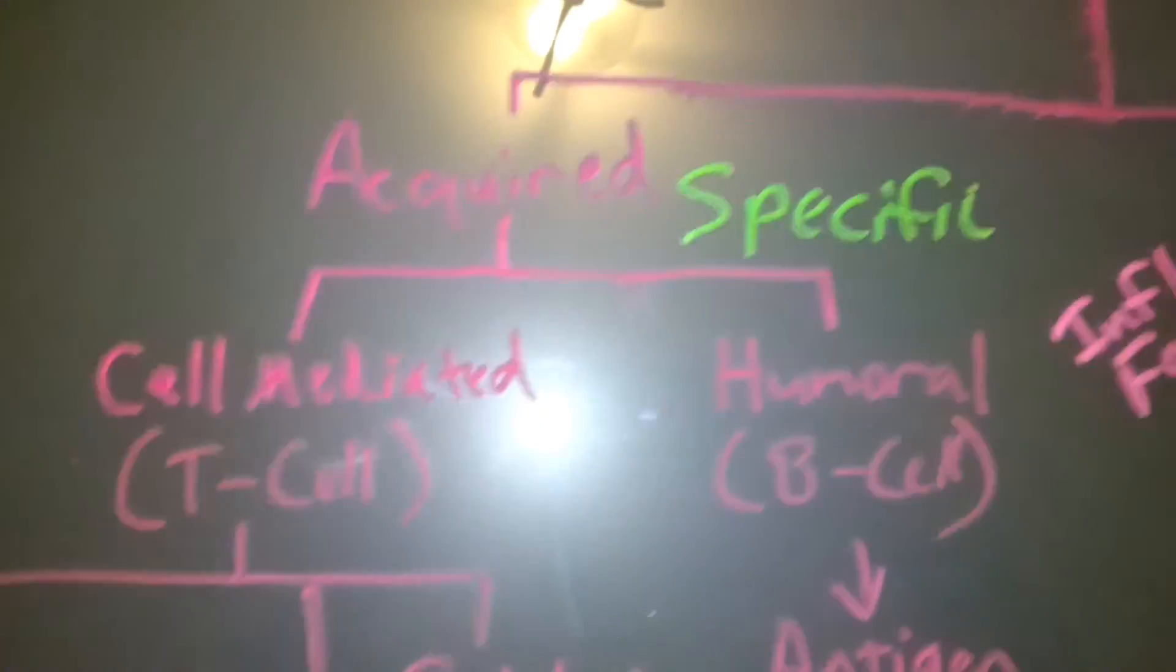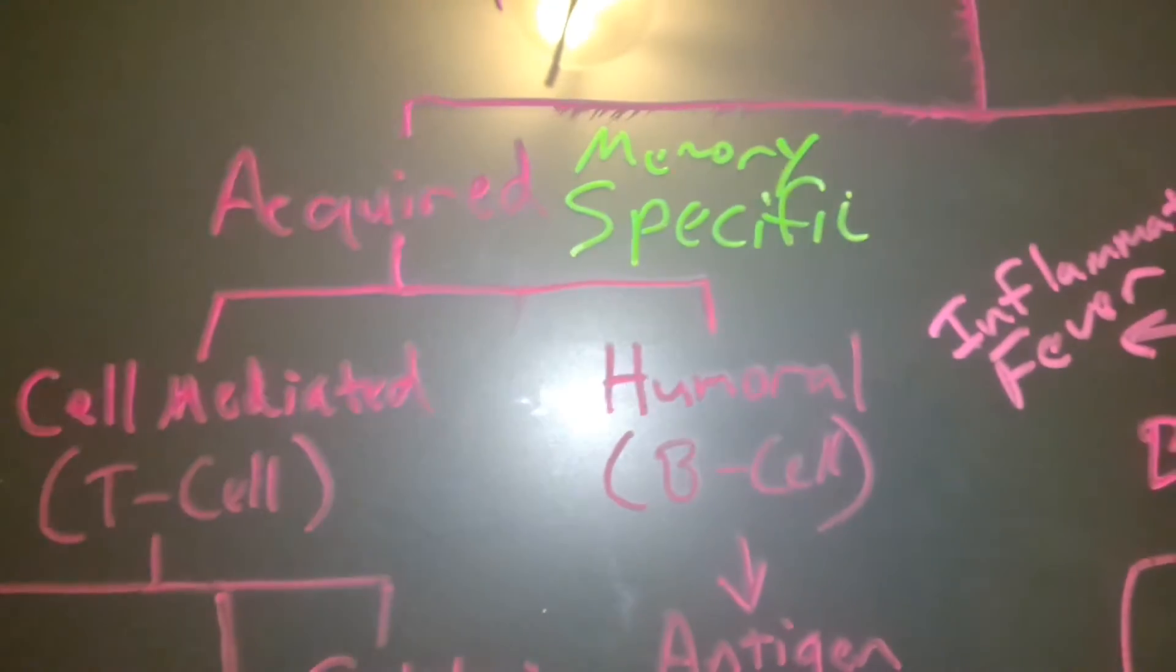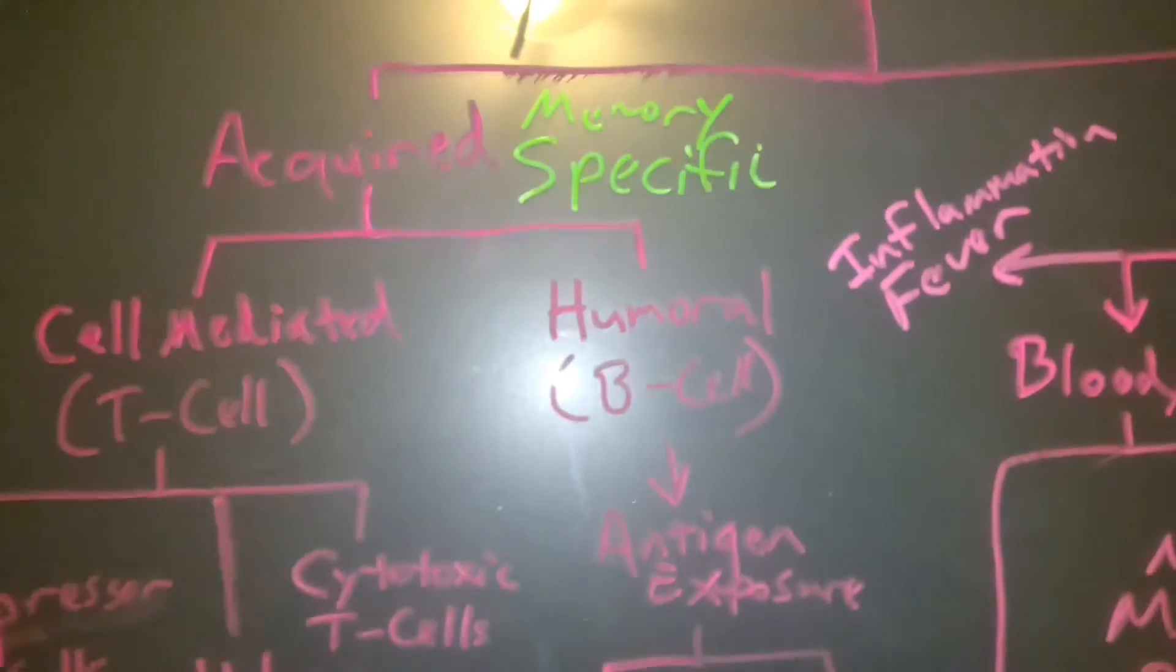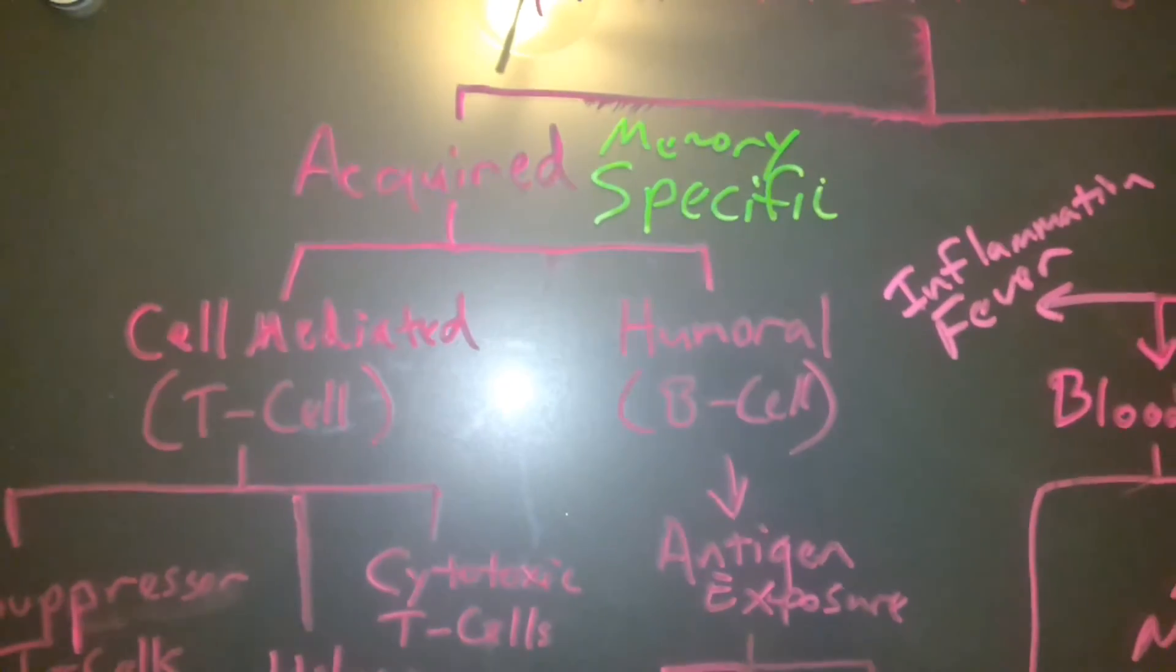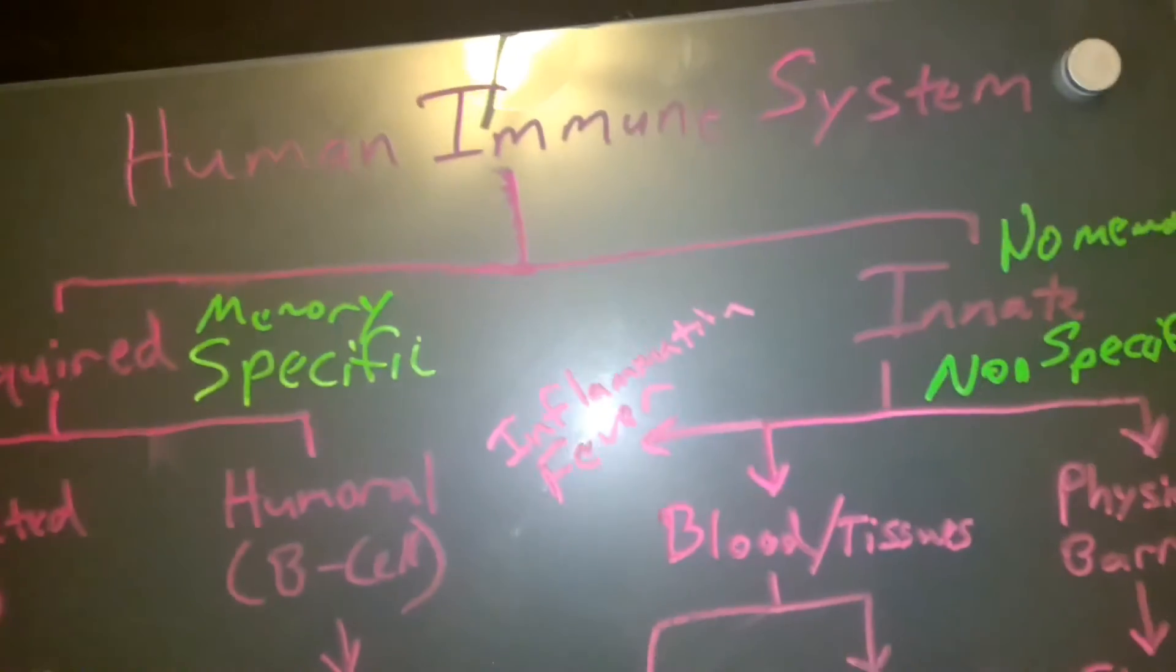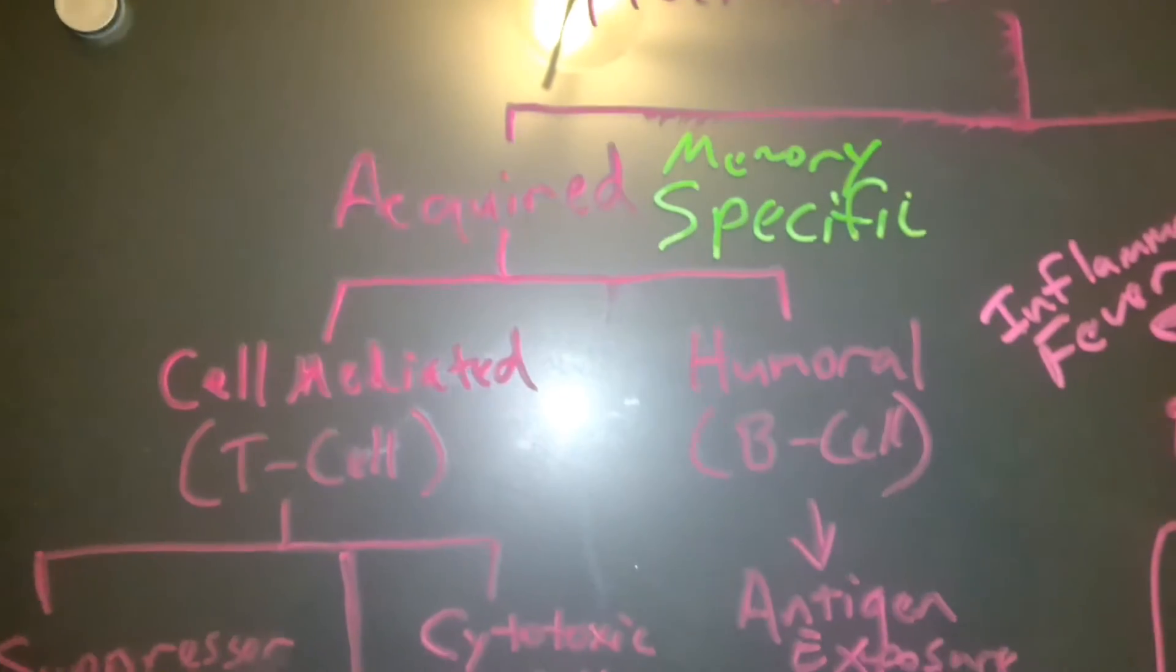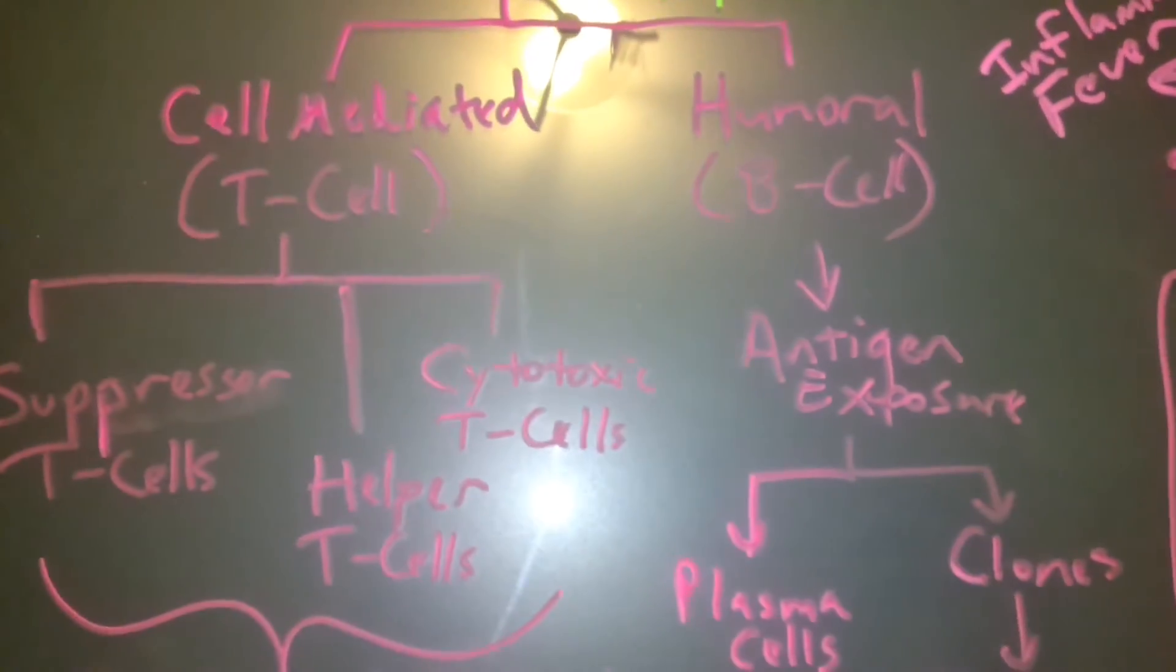It's specific. The cool thing is it has a memory. That's why when you get the chicken pox when you're seven years old, you don't get the chicken pox again when you're 37, because acquired immunity has an actual memory to it. So let's break these down. If we start with acquired, remember this has a memory. It's also known as specific immunity and can be broken down into two categories: you've got cell mediated and you've got humoral.